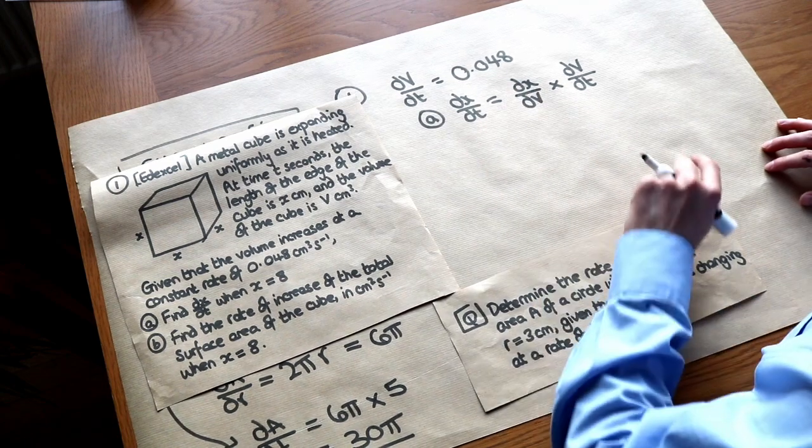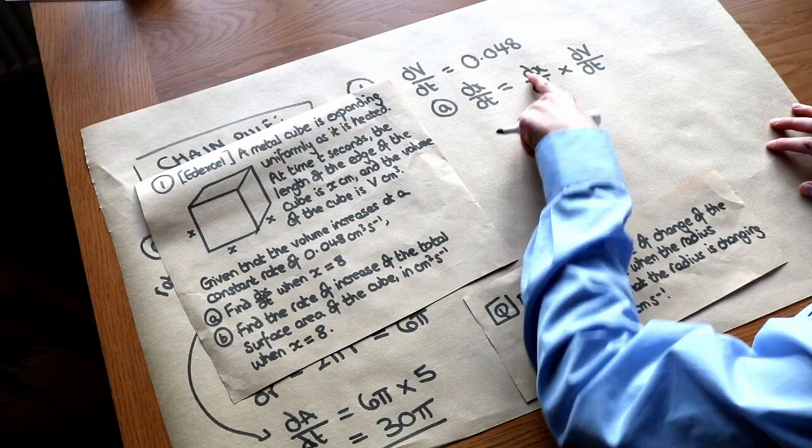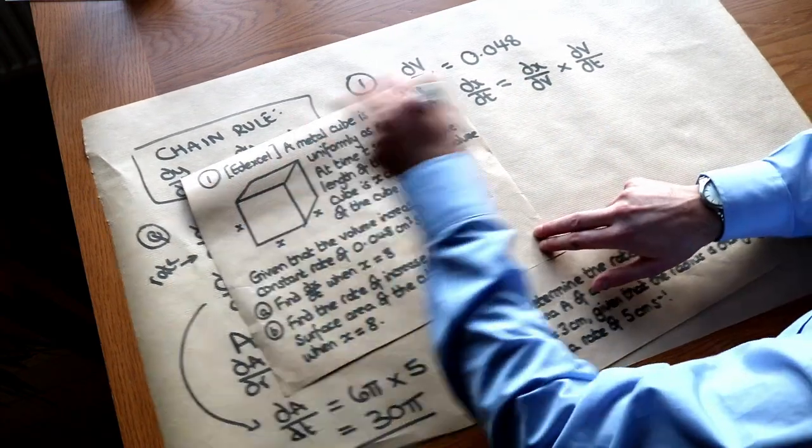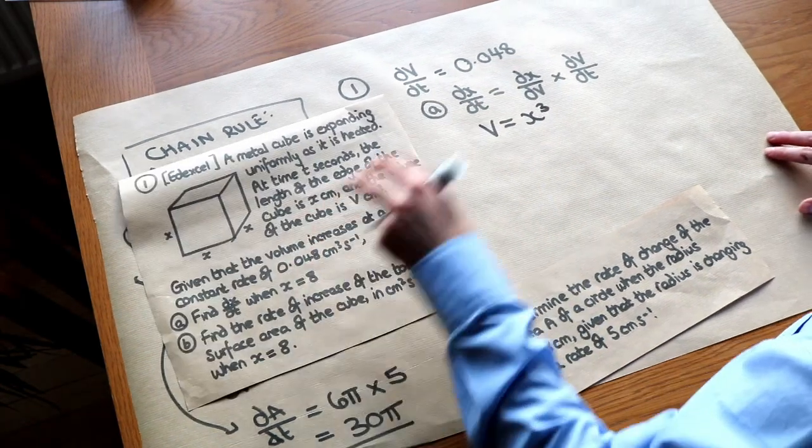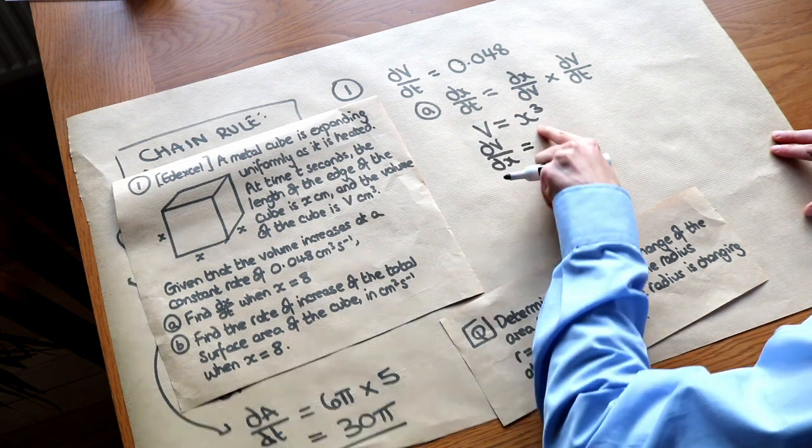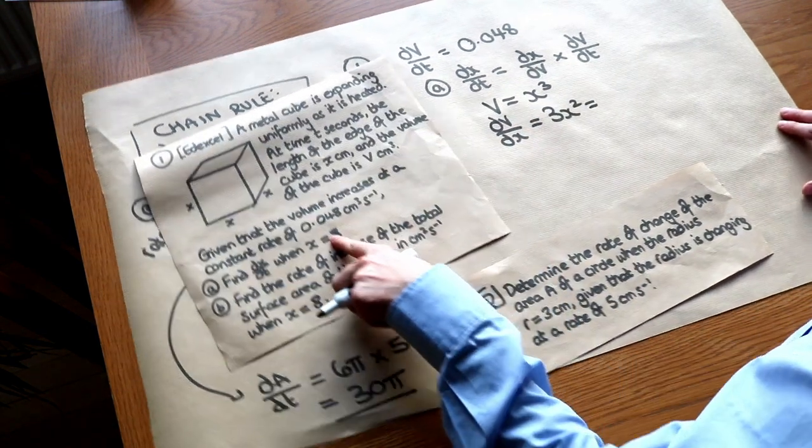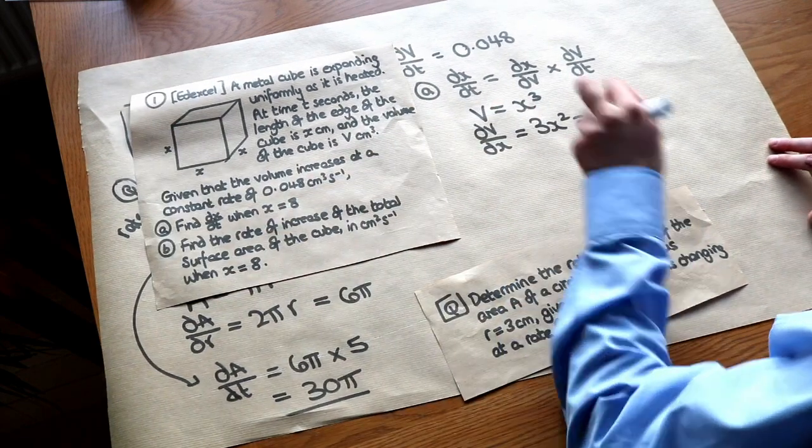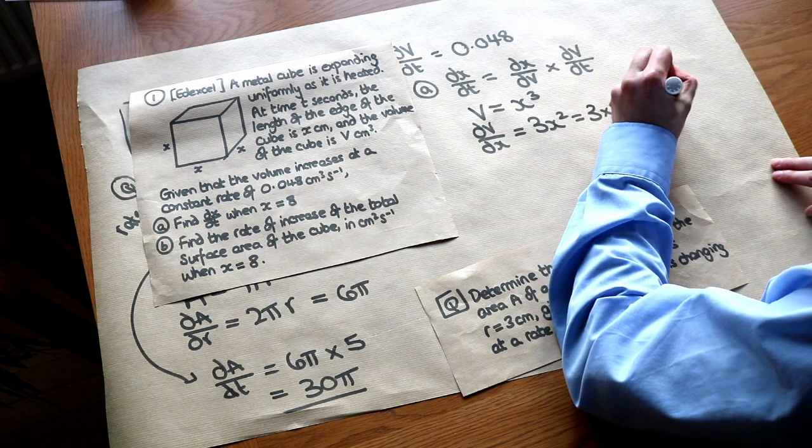The other thing, we're going to have to use some kind of geometric formula. In this case, can we relate v and x? Well, yes, we can. The volume of this cube, v, is equal to x cubed. Then we can differentiate that. So dv over dx is equal to 3x squared. But when x is 8, we can sub in the 8. It's 3 times 8 squared, which is 192.